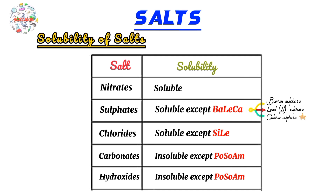Moving on to the third one: chlorides. All chlorides are soluble except for silver chloride and lead chloride. One thing to remember is that lead chloride is soluble in hot water, so if you were to dissolve it in hot water or warm it, it will dissolve.